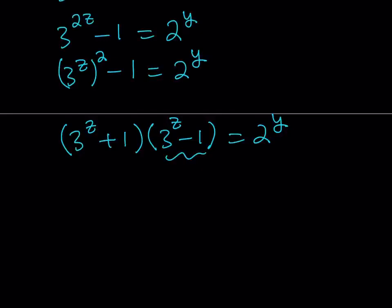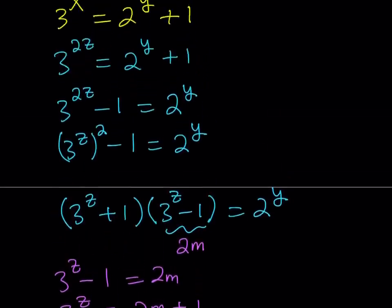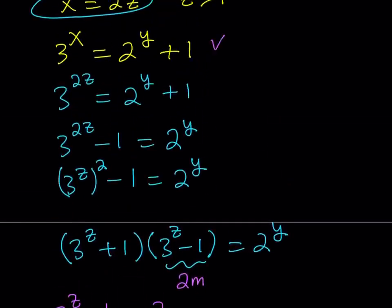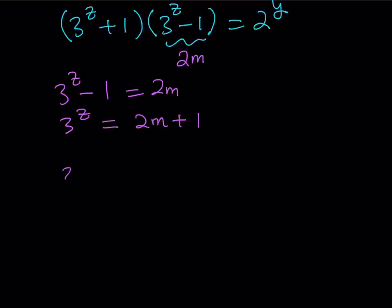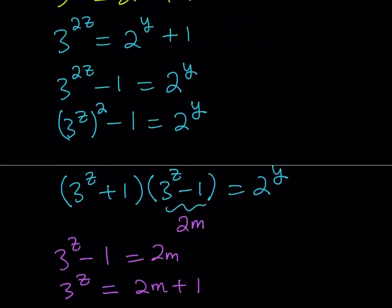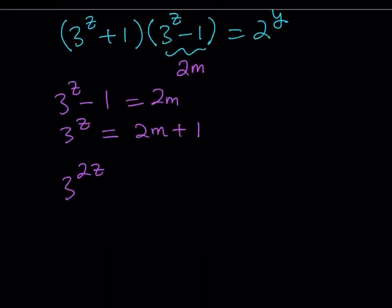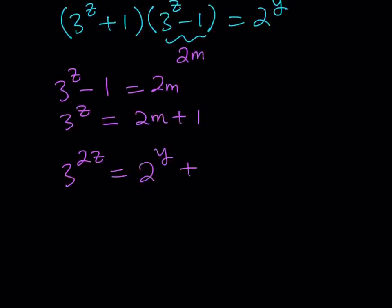3 to the power z minus 1 needs to be an even number. So what is that supposed to mean? Well, I can safely say that this can be written as 2m, where m is an integer. So let's write it down and see what happens. 3 to the power z minus 1 equals 2m. From here, 3 to the power z becomes 2m plus 1, which means that 3 to the power z needs to be an odd number. Now, what is so significant about it is our original equation. We had this equation, and then we replaced x with 2z. So we have 3 to the power 2z equals 2 to the power y plus 1.